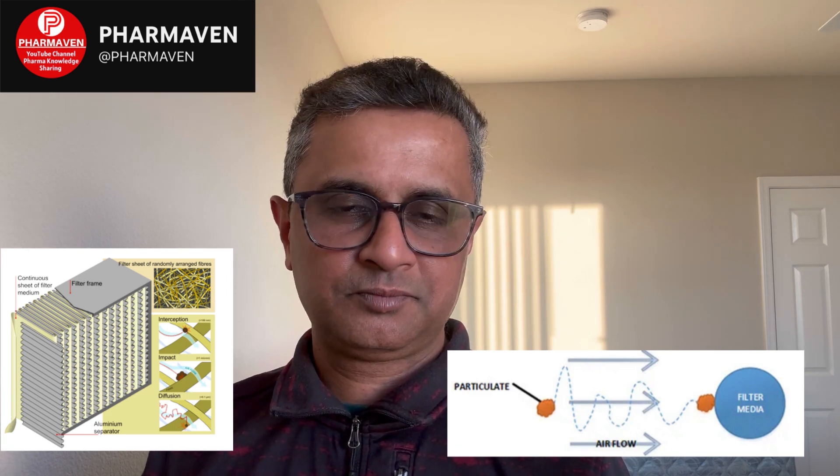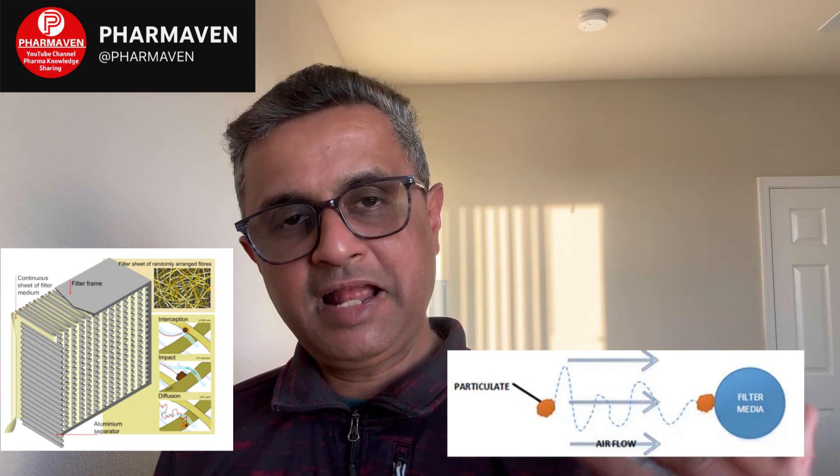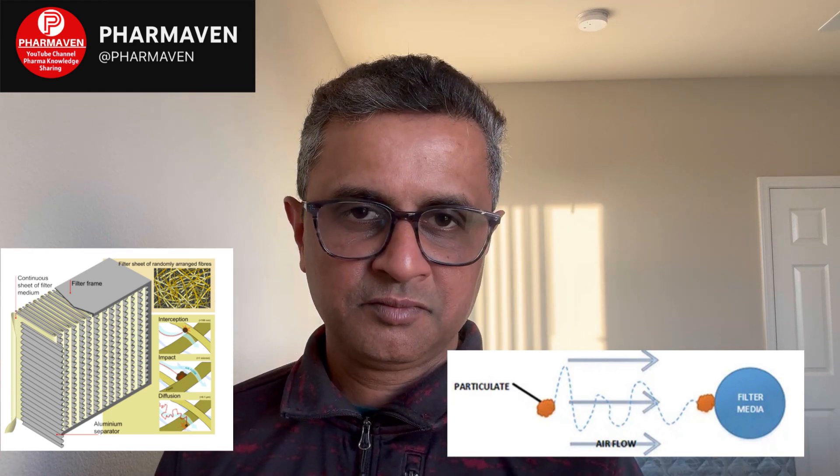When these small particles enter the HEPA filter structure, due to their Brownian movement they keep in motion and at some point come into contact with the fiber structure and get attached to it. Once they contact the fibers of the HEPA filter, they do not travel further — and that's how they get removed.